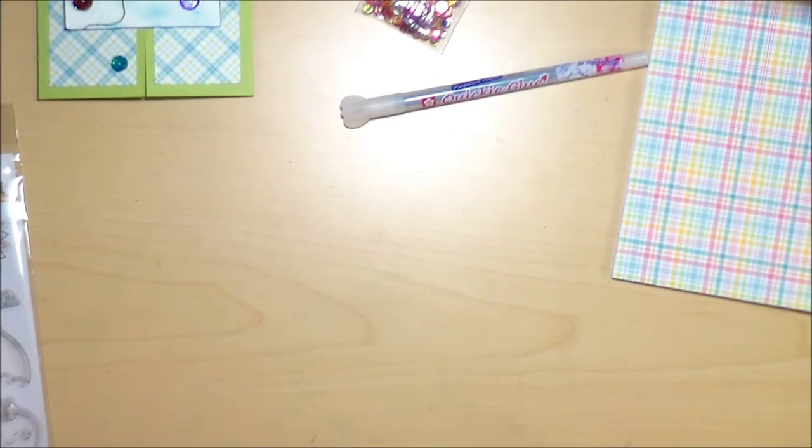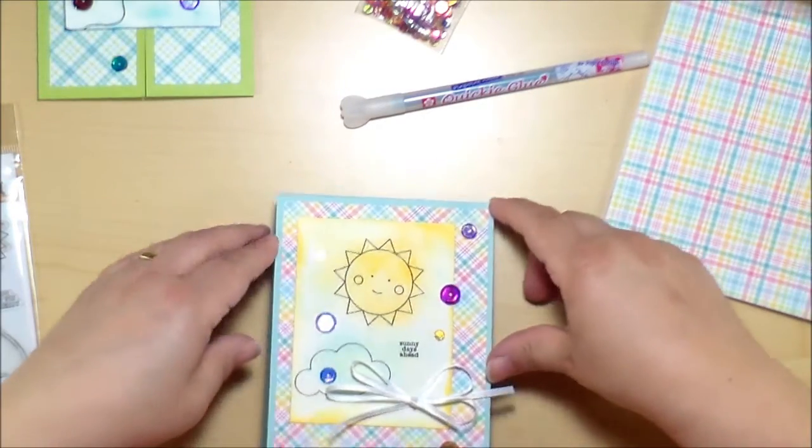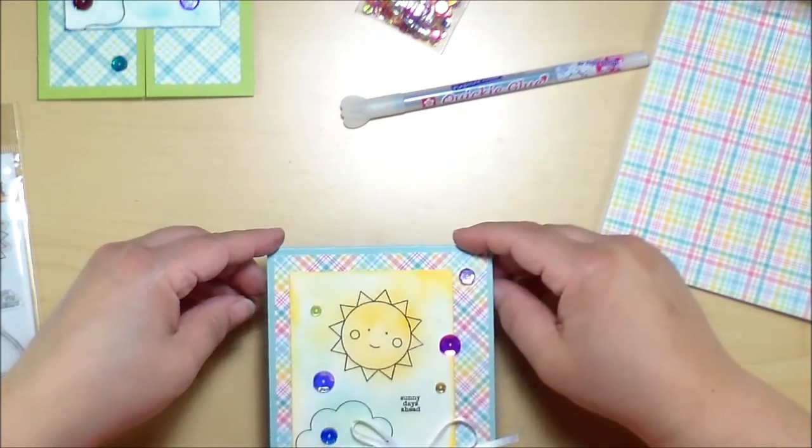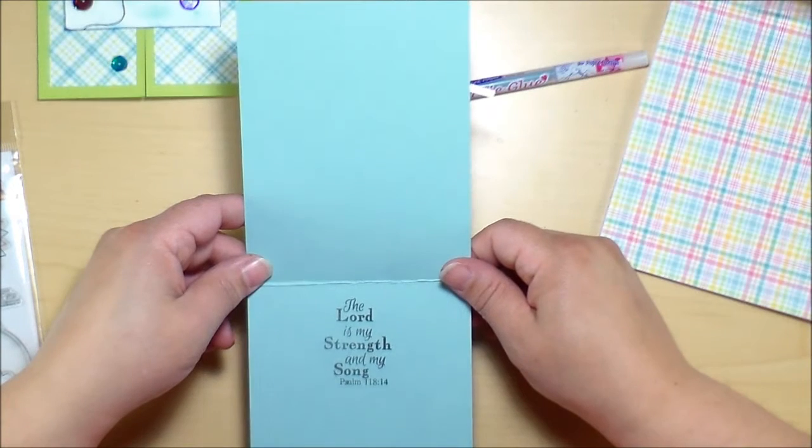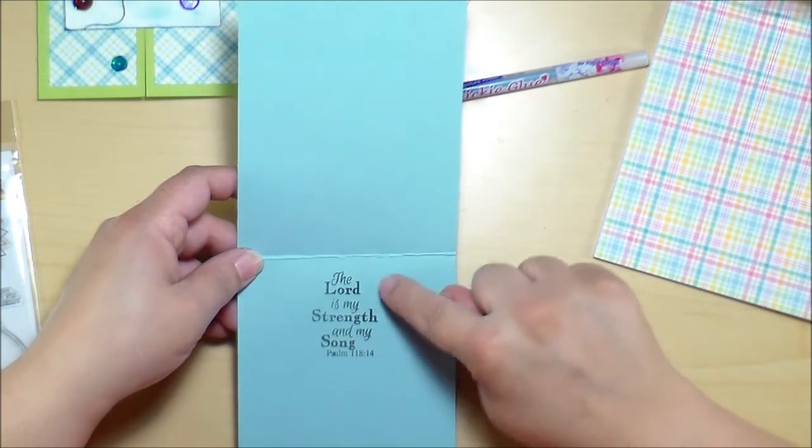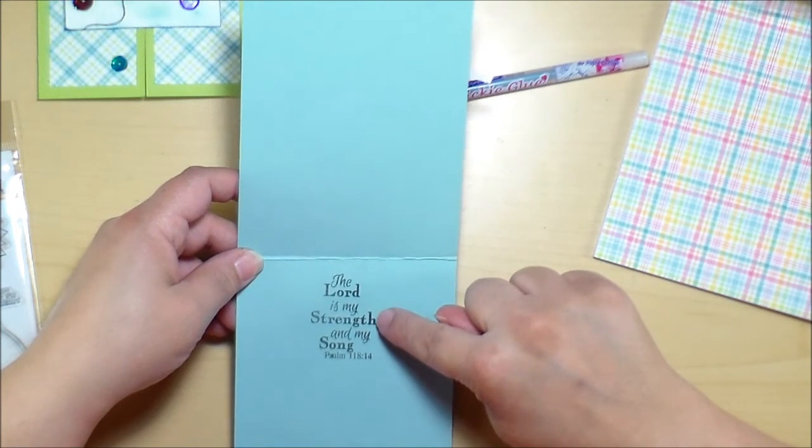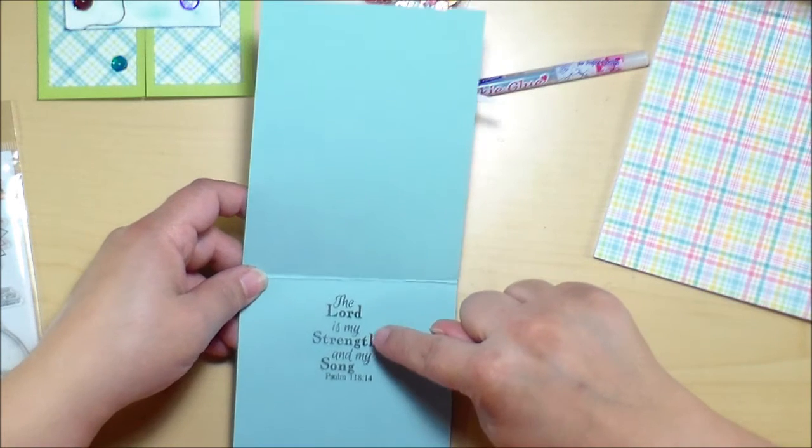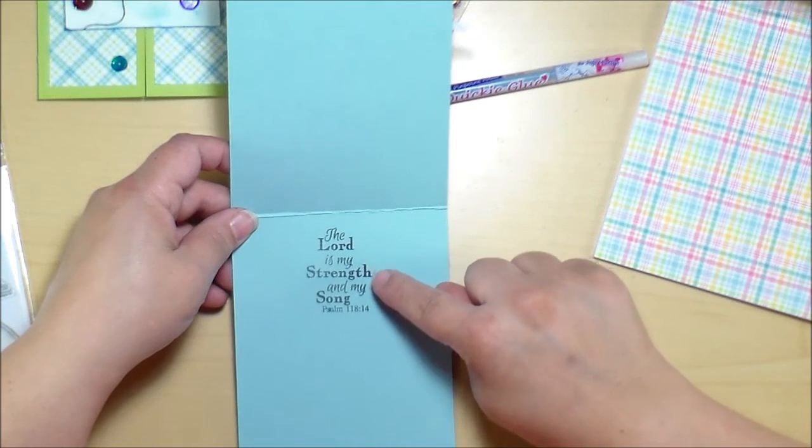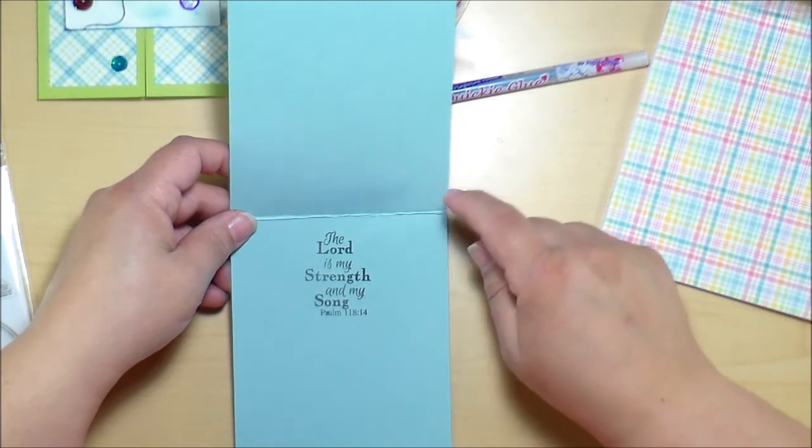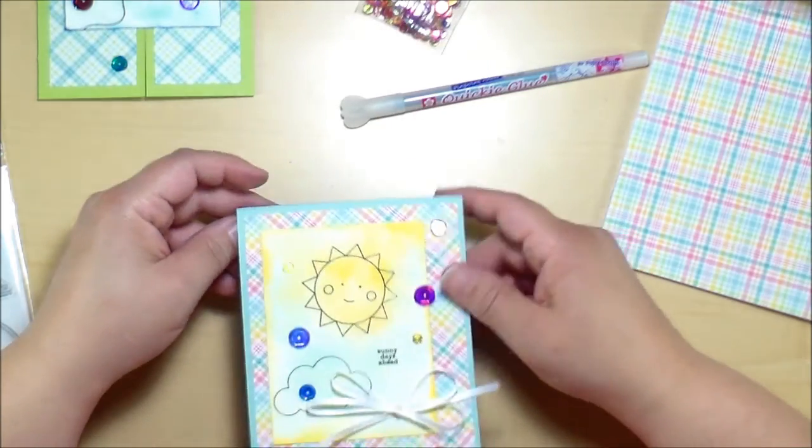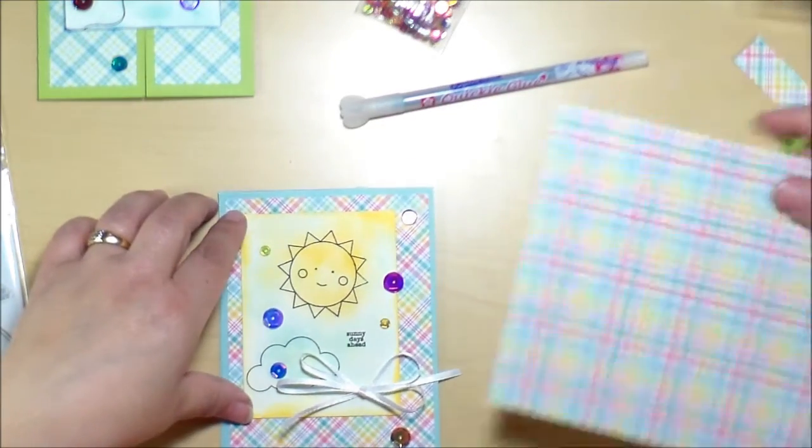And then the last card is going to someone who's having surgery here recently from my church. And again, I cut a piece of the cardstock in half vertically to make a top fold card. On the inside I used another stamp from a MFT stamp set. This is from one of her scripture sets. It says the Lord is my strength and my song from Psalm 118 verse 14.